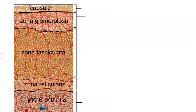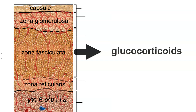In this video, we're going to talk about the hormones that come from the zona fasciculata. The zona fasciculata secretes a family of hormones called glucocorticoids — cortisol is an example.